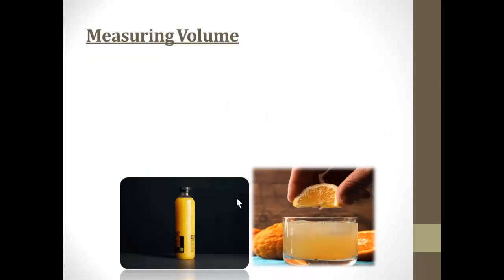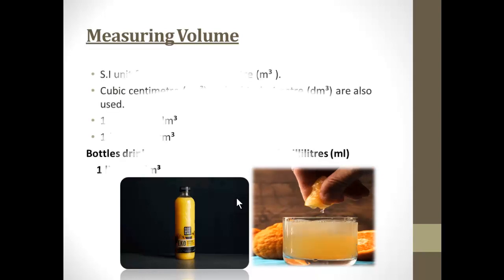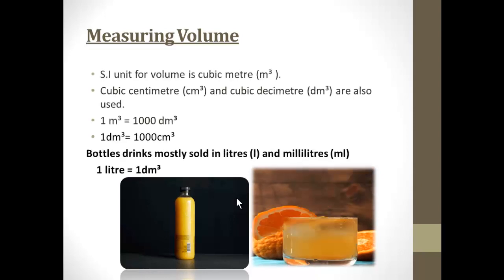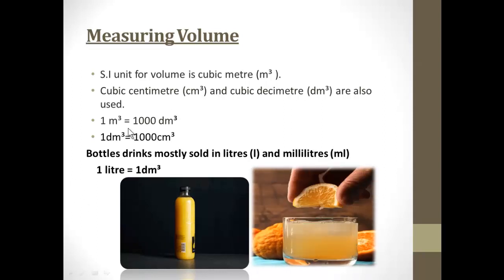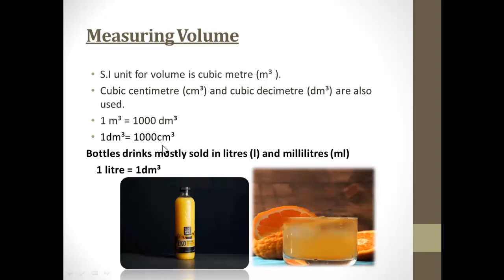How to measure volume? The SI unit is cubic meter, or cubic centimeter and cubic decimeter are also used. Remember, 1 meter cubed equals 1000 dm cubed, and 1 dm cubed equals 1000 centimeter cubed. Mostly bottled drinks which are sold are in liters and milliliters. Remember, 1 liter equals 1 dm cubed.